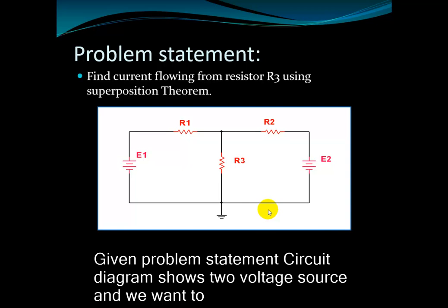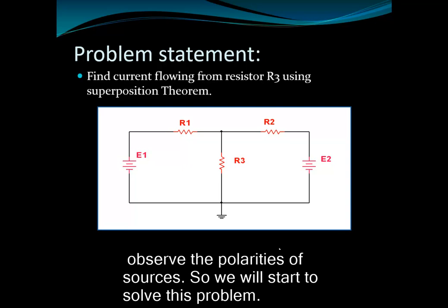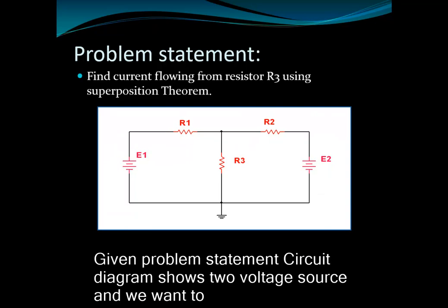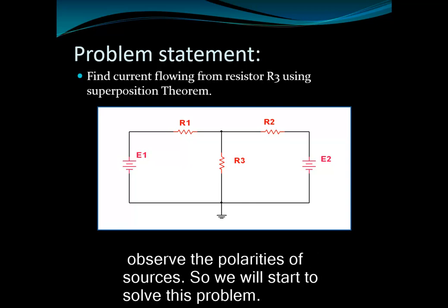Given the problem statement, the circuit diagram shows two voltage sources and we want to find the current flowing through R3. Whenever you read the problem statement, first observe the polarities of the sources. So we will start to solve this problem.